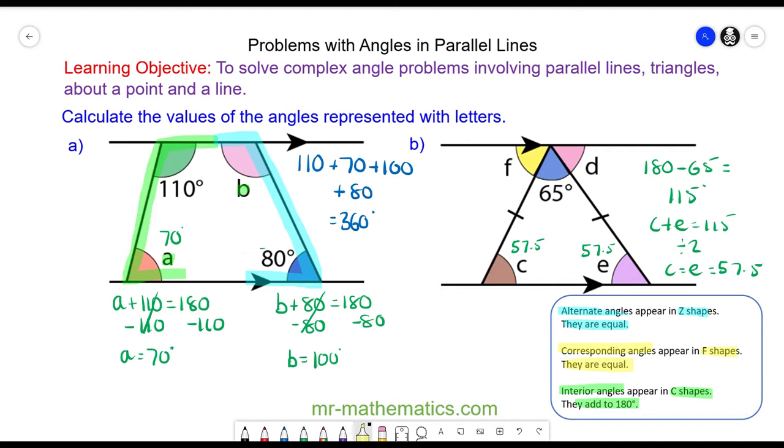And now we can use alternate angles with F and C because these appear in a Z shape. And because they are alternate, angle F will also equal 57.5 degrees. Angle D and angle E are also alternate, so these will also be equal and angle D is equal to 57.5 degrees. We know this is right because F, 65, and D lie along a straight line and should add up to 180, which they do.